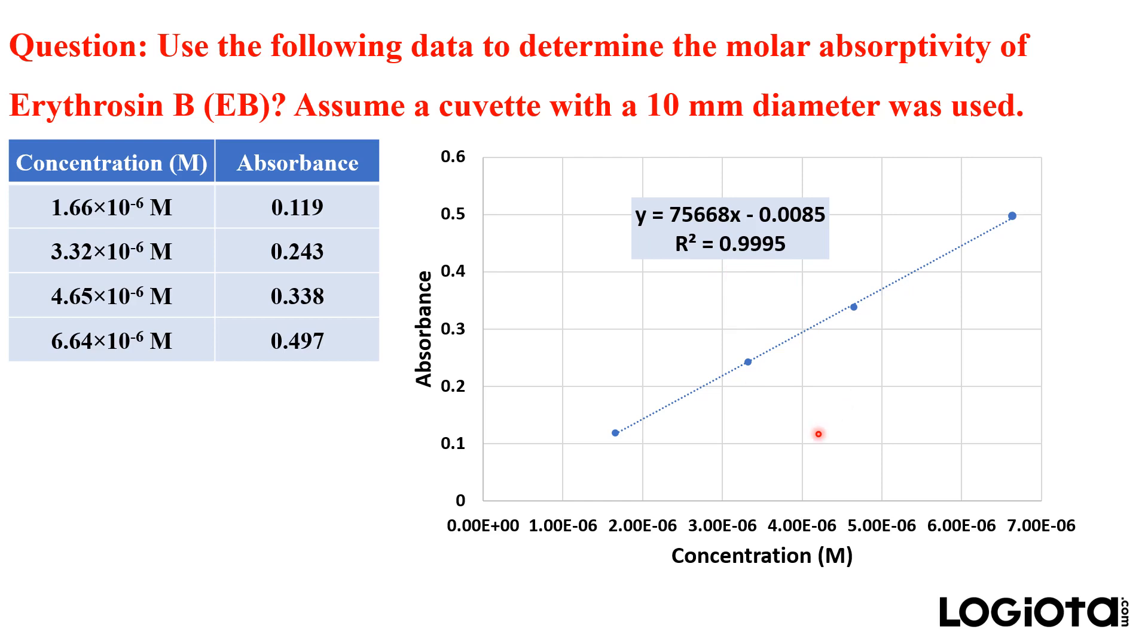Now next thing we need to see is that the equation of line is y equals mx plus c where m is the slope of the line and c is the intercept.